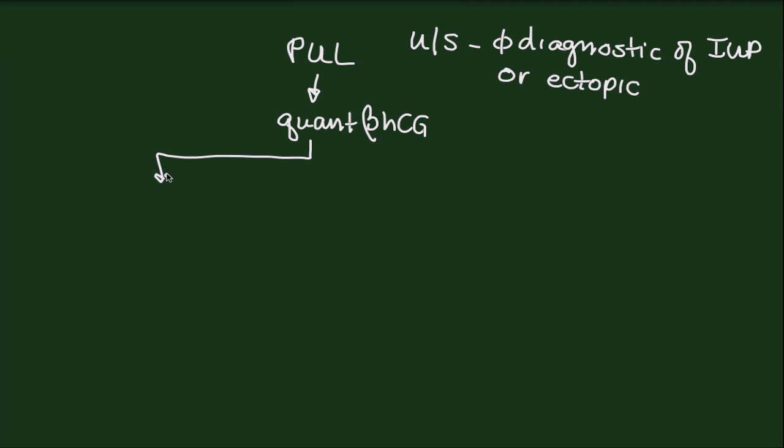Once we get that quant, then it's going to either be above the discriminatory zone or below the discriminatory zone. And by discriminatory zone what I mean is what range of quantitative beta HCG values would we expect to see a definable intrauterine pregnancy. And if you read the literature basically what you learn is that this discriminatory zone is different for each institution. And that there are many publications on what the discriminatory zone is at their institution.